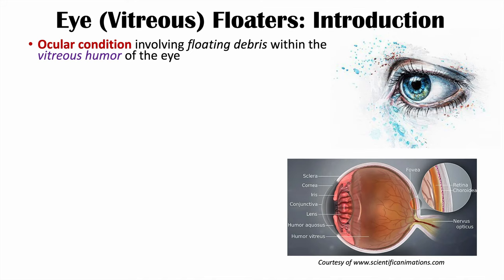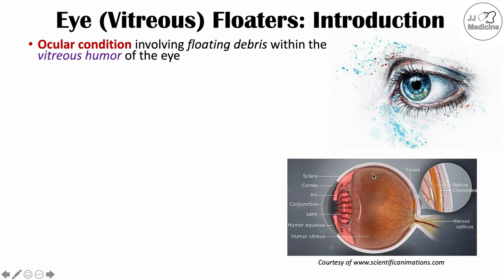Let's briefly take a look at eye anatomy. On the outside of the eye we have the conjunctiva and the cornea. Going further in, we have the iris, which is the muscle that gives your eye its color — it controls the size of your pupil. We have the lens, and further into the eye we have the vitreous humor. This is where we're going to see that floating debris.